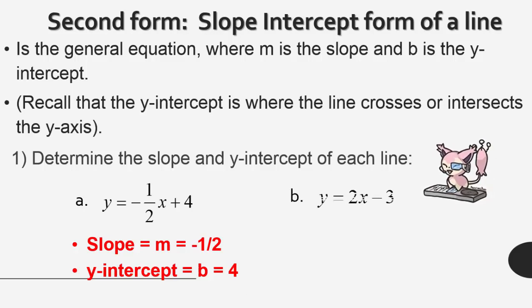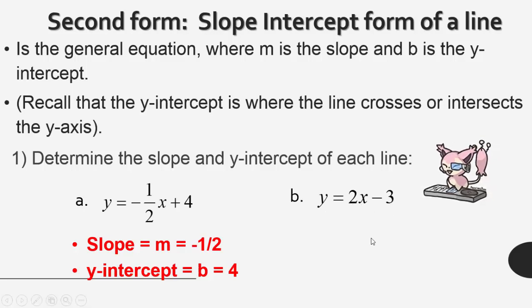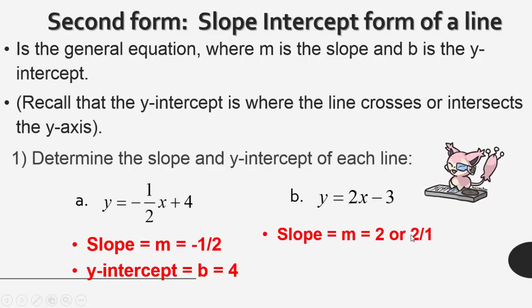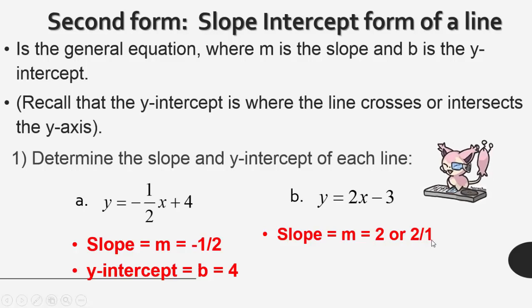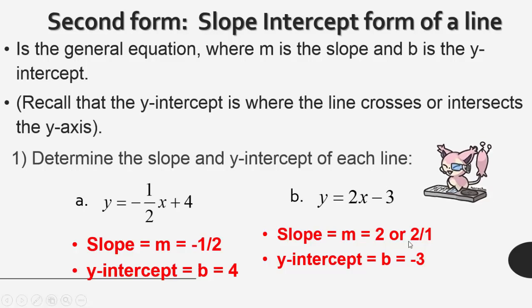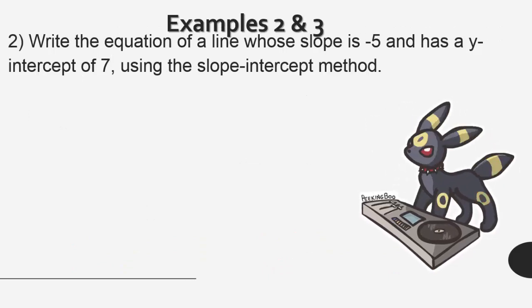In line B, we have y is equal to 2x minus 3, where the slope M is 2, or one could say 2 over 1, and the y-intercept B is equal to negative 3.